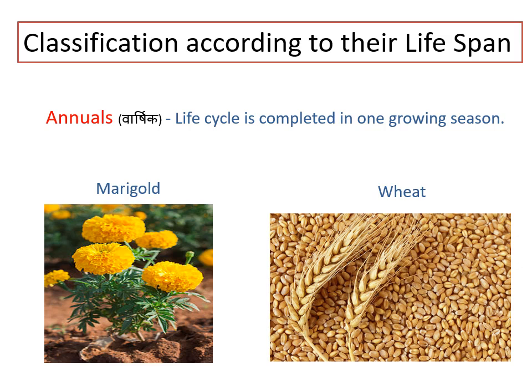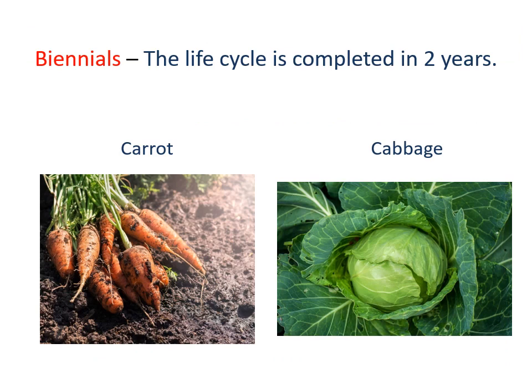Annuals complete their life cycle in one season. Here are some plants known as biennials — bi means two — so the life cycle of these plants is completed in two years. When we say life span, it means from germination of seed, then growing the plant, then again flowers, then fruits, and again to the production of seeds — all these stages are included in a life cycle. In the case of plants like carrot and cabbage, this life cycle is completed in two years, so they are called biennials.